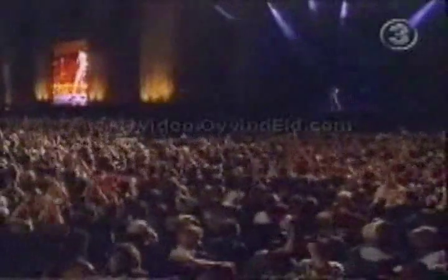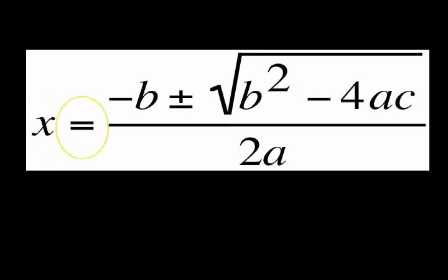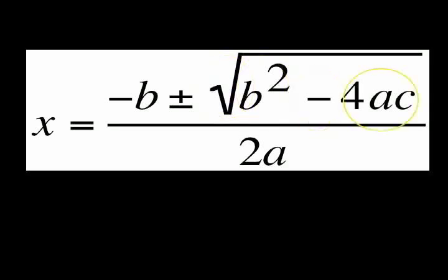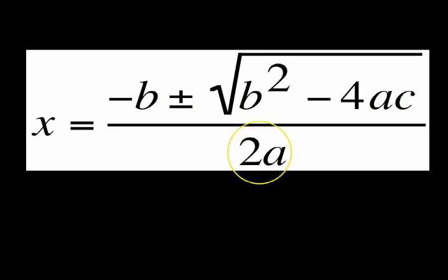Hi boys and girls! Are you ready to learn the quadratic formula, son? Cool! x equals negative b plus or minus square root of b squared minus 4ac divided by 2a.